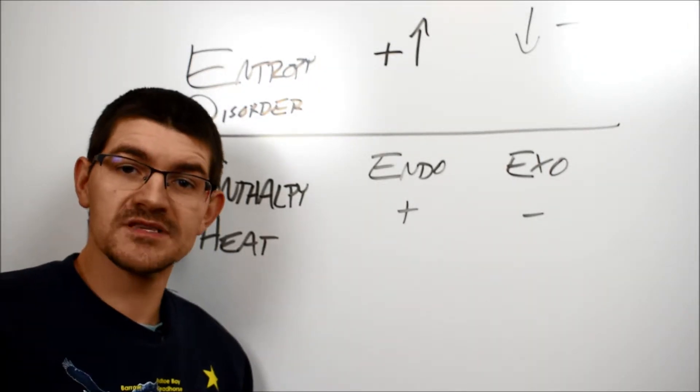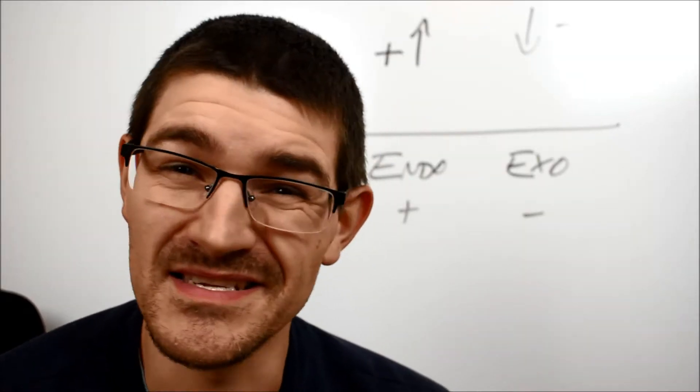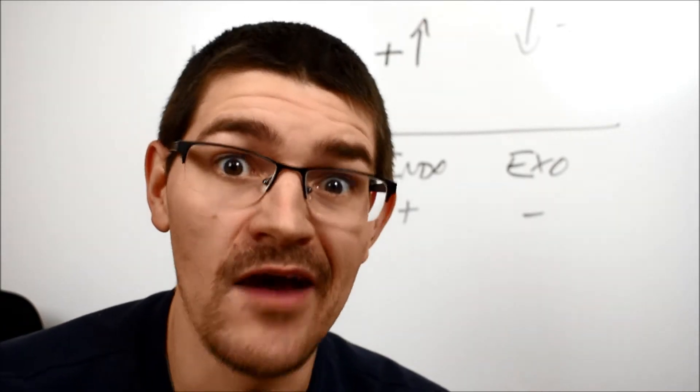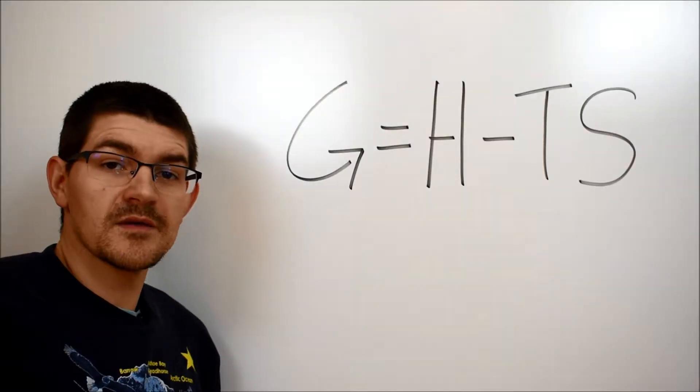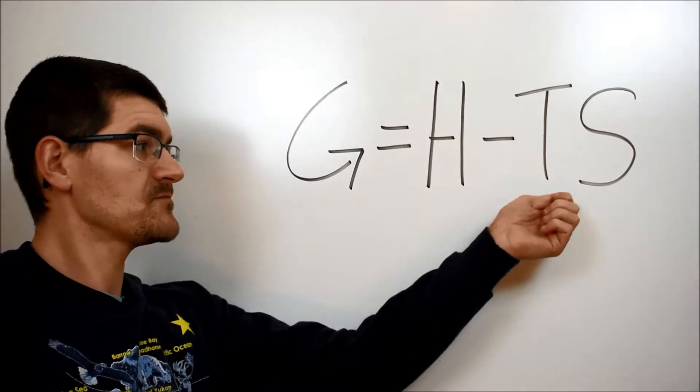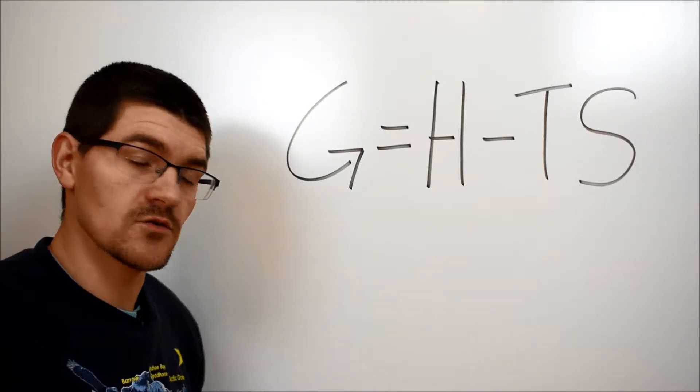Well the answer there is something called Gibbs free energy. Gibbs free energy is one of my favorite things in all of chemistry because it explains basically how anything ever works. This is the Gibbs free energy equation. G the free energy, H the enthalpy, T the temperature, and S the entropy. This is how the equation works.